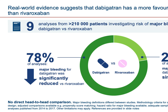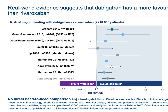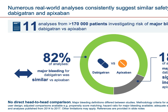In nine meta-analyses comparing dabigatran versus rivaroxaban, almost 80% of analyses showed major bleeding is significantly reduced with dabigatran, while only about one-fifth indicated similar risk between the two. The forest plot dots are all shifted in favor of dabigatran. However, since there is no head-to-head comparison, we need further real-time global data, and more may emerge in the future.